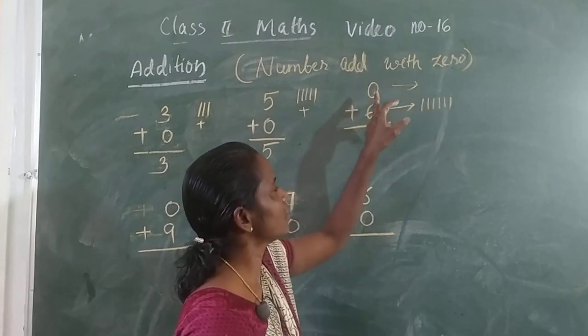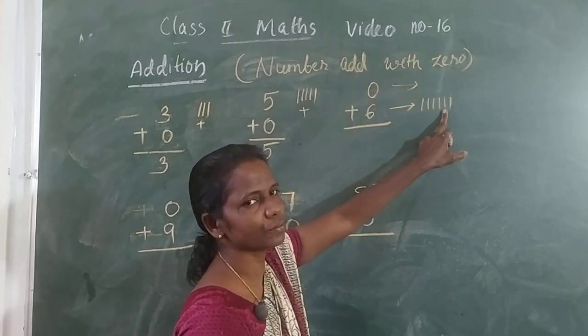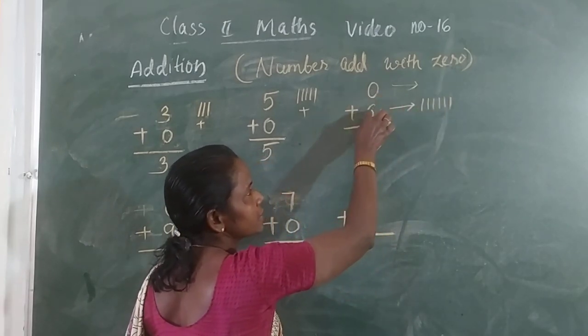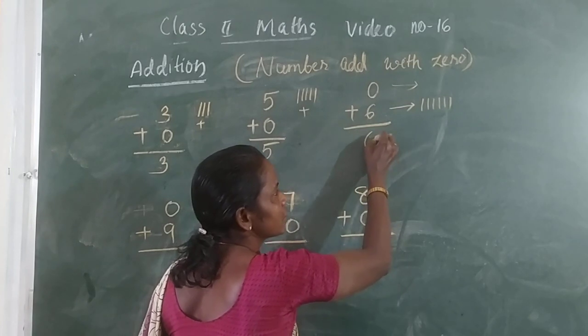Total is 0 plus 6. How many lines? 6 lines. So 0 plus 6, 6.